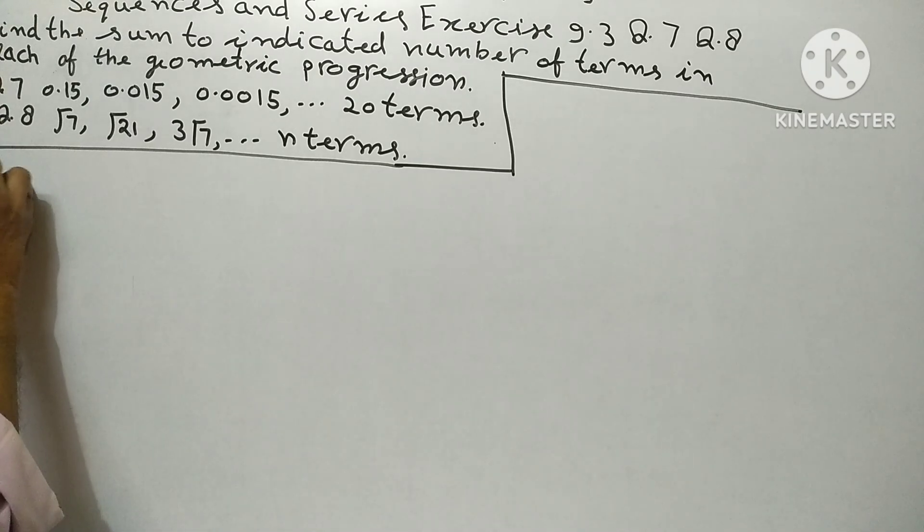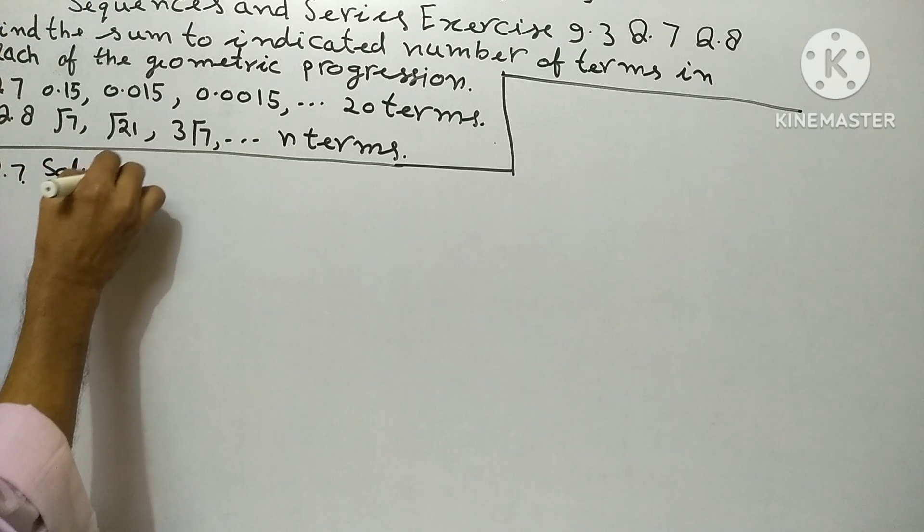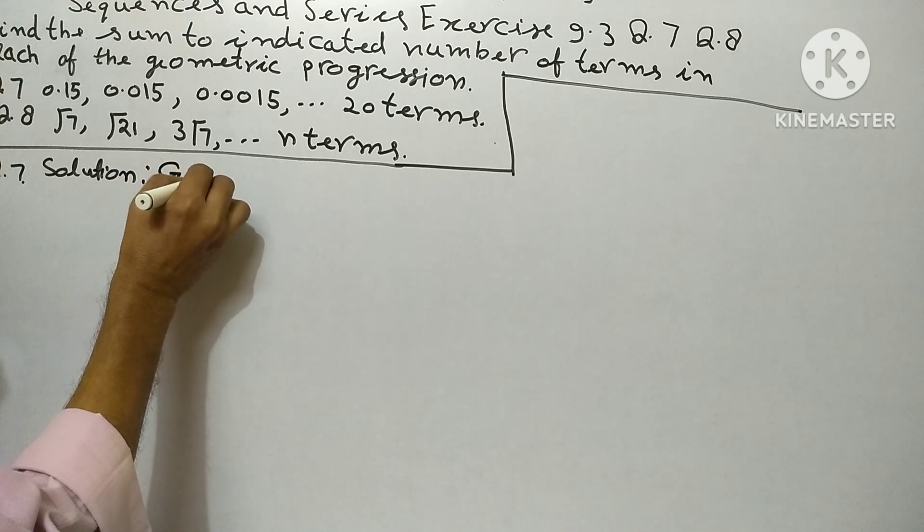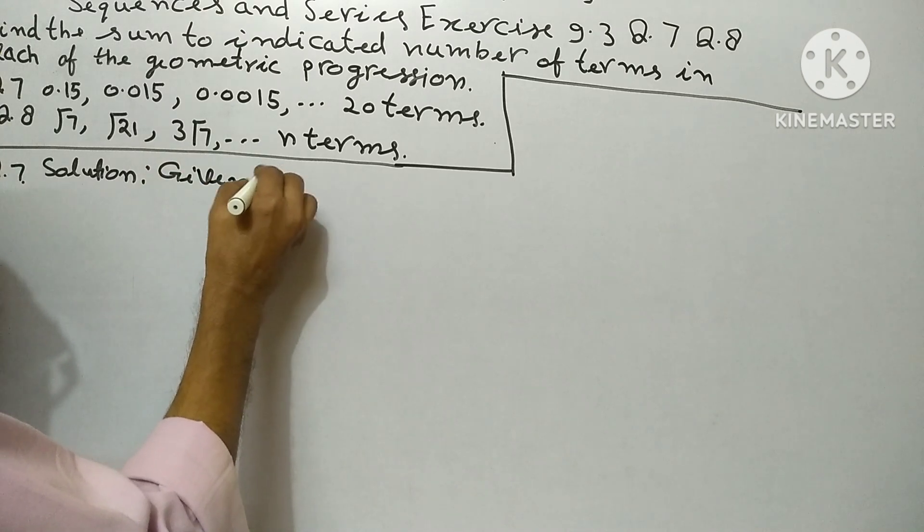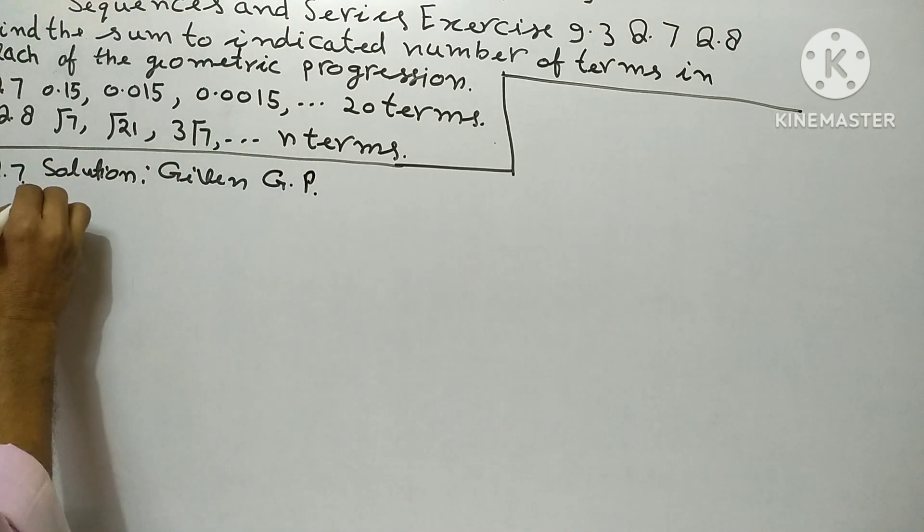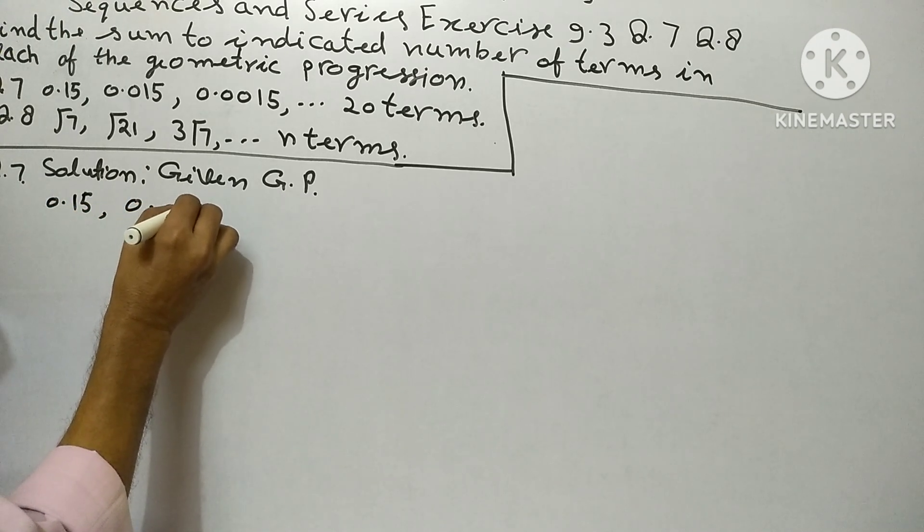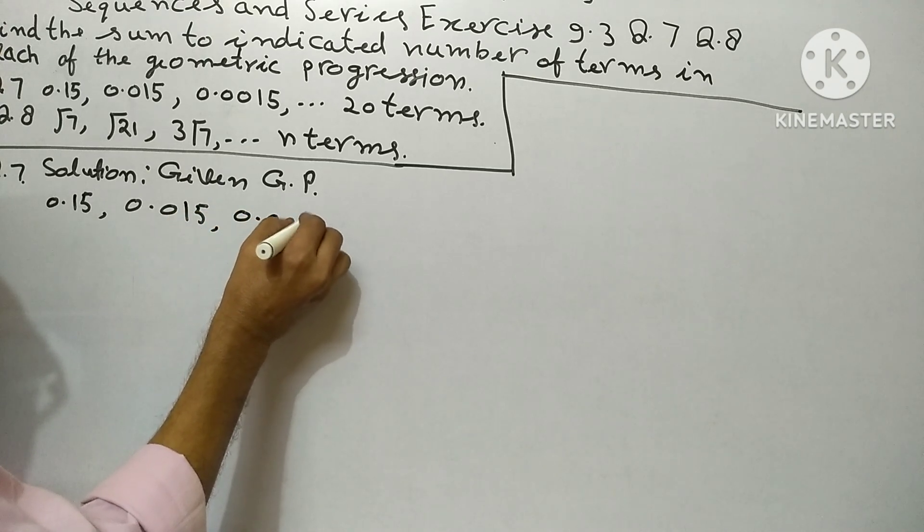Solution. Given GP: 0.15, 0.015, 0.0015.